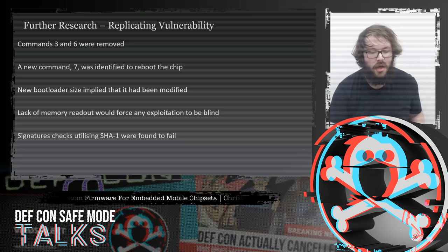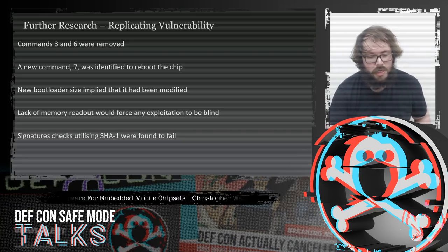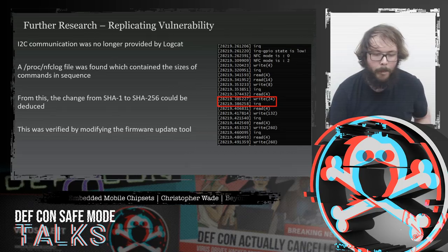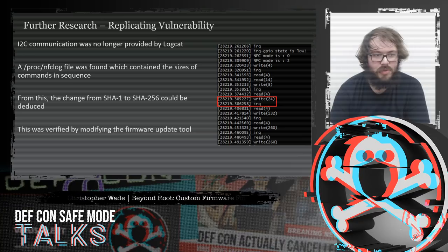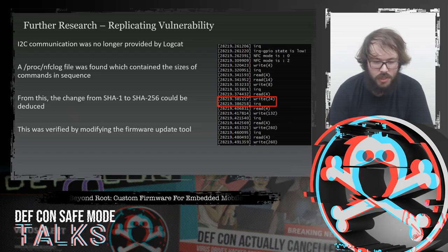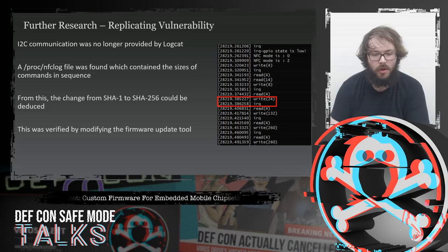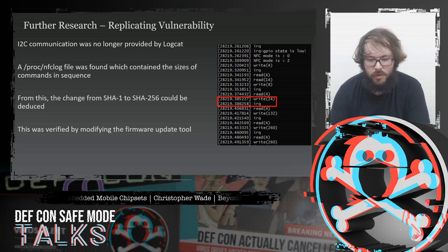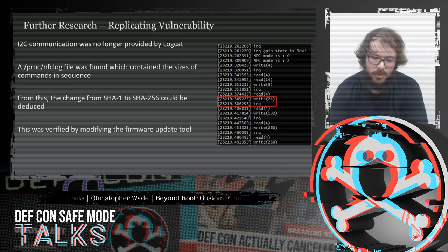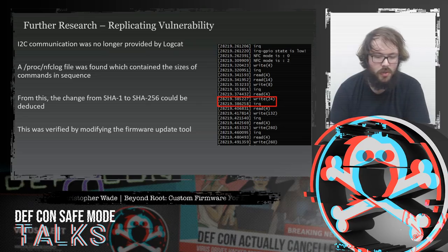I also found that signature checks no longer used SHA-1 hashes and I needed to work out what they were using. Samsung had also modified their kernel to no longer dump data via logcat. However, I found that command sizes sent during firmware update processes were stored in /proc/nfc_log in the file system. Looking through these, I could see commands working in sequence and found that during the start of firmware updates, the hash was 32 bytes plus 4 bytes — implying a move from SHA-1 to SHA-256.